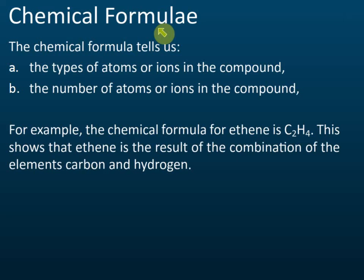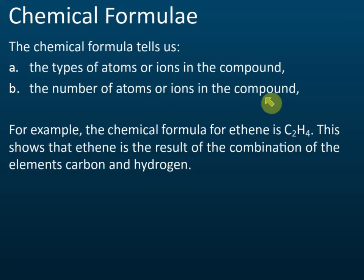A chemical formula tells us two things: the types of atoms or ions in the compound, and the number of atoms or ions in the compound. For example, C2H4 — this is ethene, which you will learn in Form 5, Chapter 2 on carbon compounds.